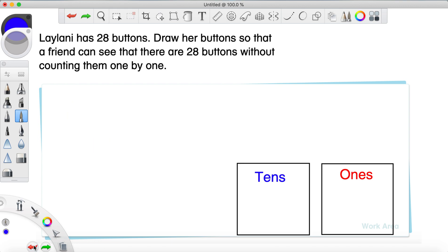And if you have this all set, we're gonna just roll on through. So, we're gonna try to solve this little story problem here. It says that Leilani has 28 buttons. Draw her button so that a friend can see that there are 28 buttons without counting them one by one. Well, we're gonna use that little method we just talked about by using the ten sticks and the one circles.